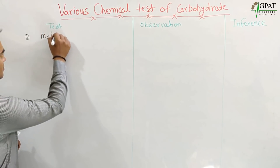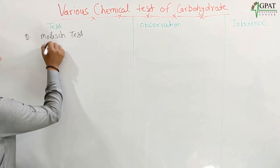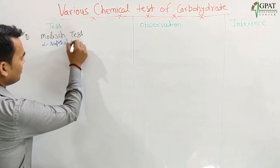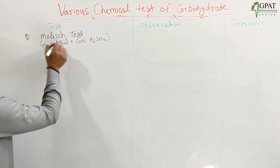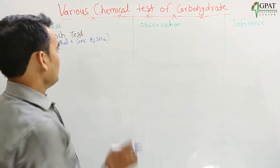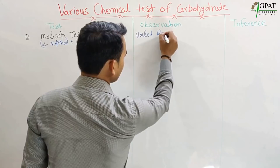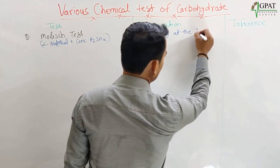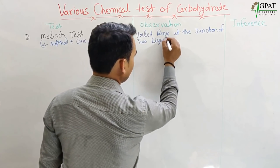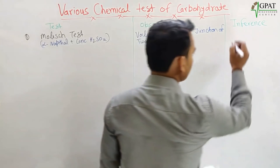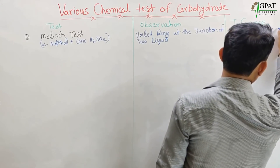First, the Molisch test: the reagents are alpha-naphthol plus concentrated H₂SO₄. When applied to the mixture, a violet ring forms at the junction of the two liquids. This is a positive observation and is a common test for all carbohydrates.